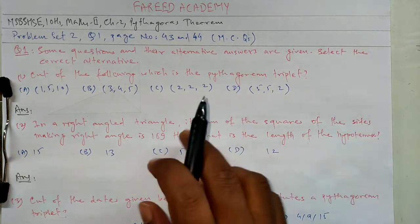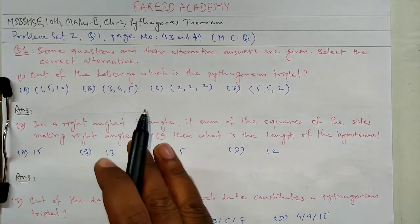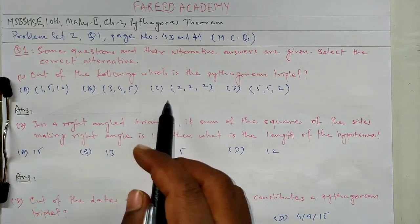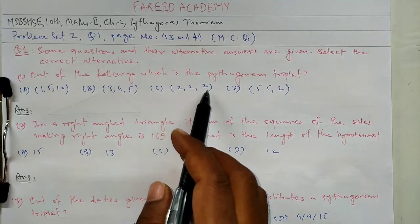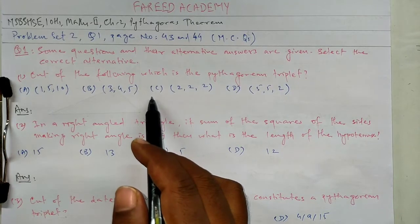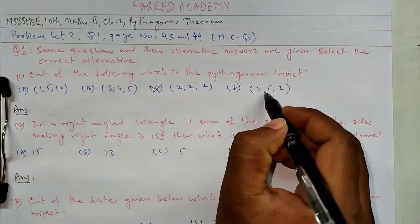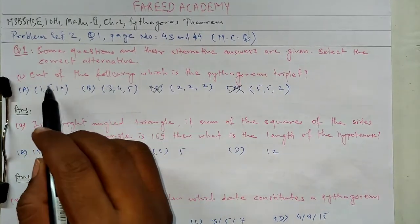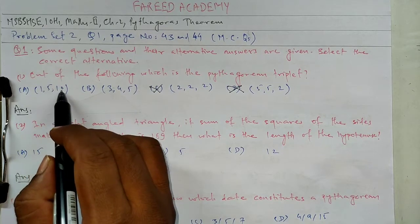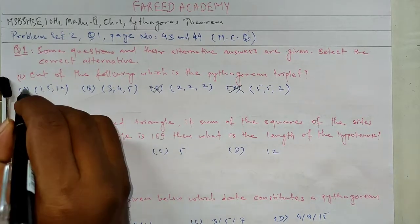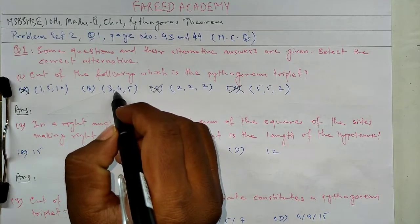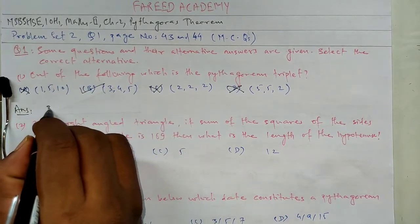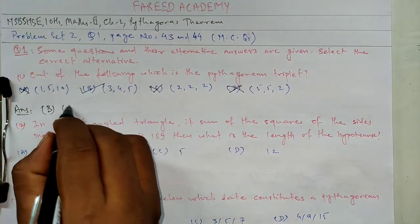When you solve MCQs, you have to understand that Pythagorean triplet numbers are not repeated. Here is repeat, 5, 5. So, 1, 5, 10 and 3, 4, 5. 1 square plus 5 square is 26. 26 is not the square of 10. So 3, 4, 5. 3 square plus 4 square is 9 plus 16, 25. 25 is the square of 5. Option B is correct. B, 3, 4, 5.